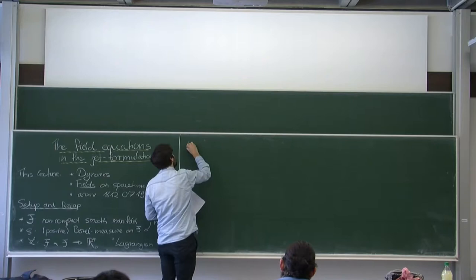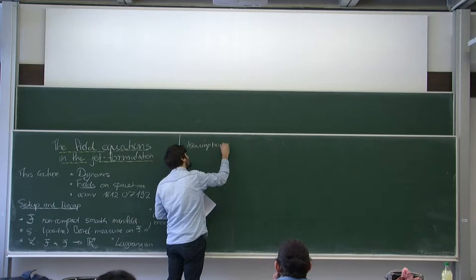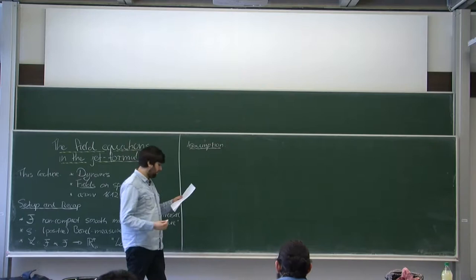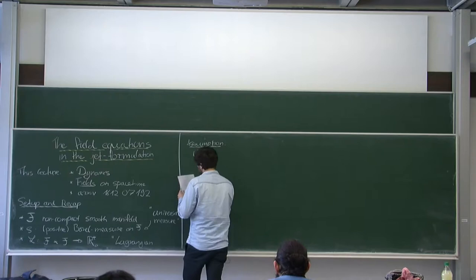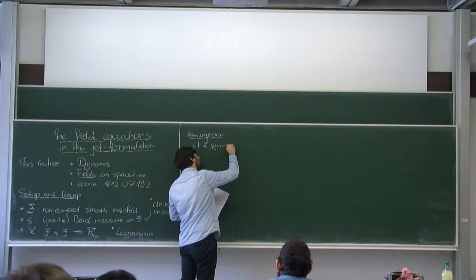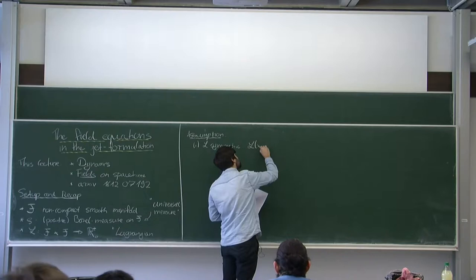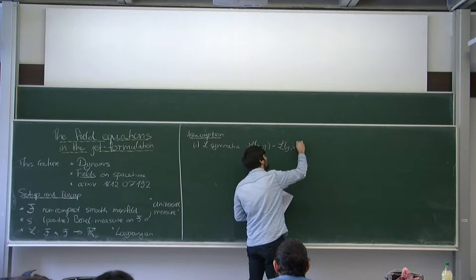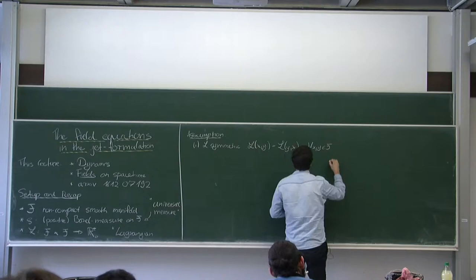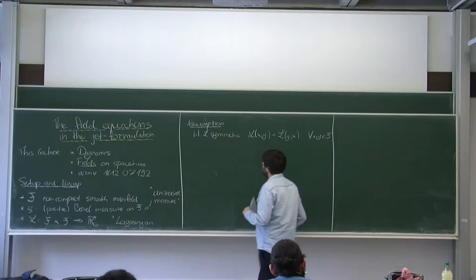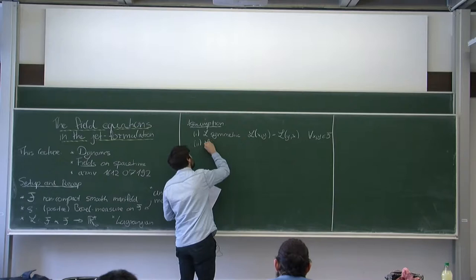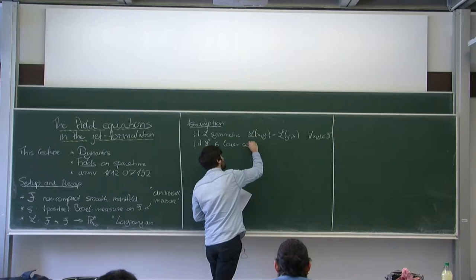The assumptions are as follows. The first assumption is that the Lagrangian is symmetric: L of x and y is the same as L of y and x, for all x and y in F. This was actually a question yesterday. The second assumption is that this Lagrangian is lower semi-continuous.